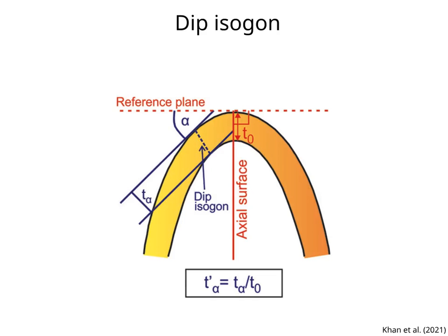A dip isagon is a line from the top to the base of a folded layer, joining points of equal dip. We can construct the isagon by tracing a reference plane, preferably perpendicular to the axial surface of the fold. Then, we construct a line of angle alpha with respect to the reference plane, and look at the points of tangency of this line with the top and base of the layer. The dip isagon joins these points of tangency.